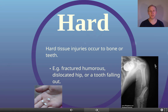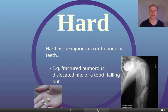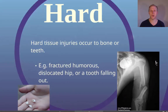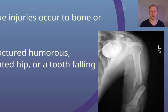Hard tissue injuries involve your bones and teeth, and are mostly fractures and dislocations, as well as breaks to teeth or teeth falling out. You can see examples showing teeth and a broken arm.